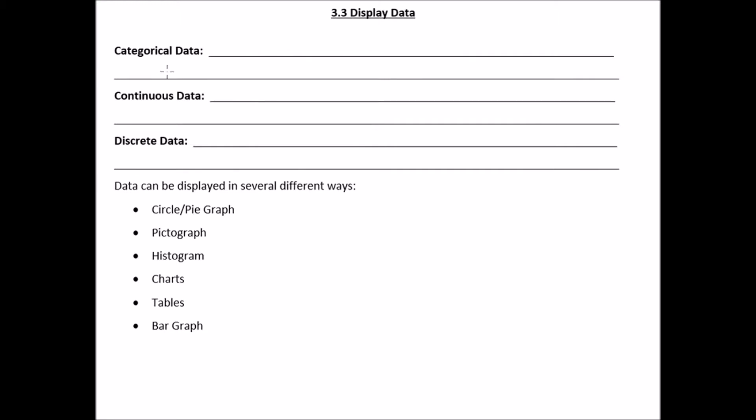So categorical data is data that is either organized or named by categories. So for example, which fruit do you like the best? Do you like apple or pears or oranges? Oranges.